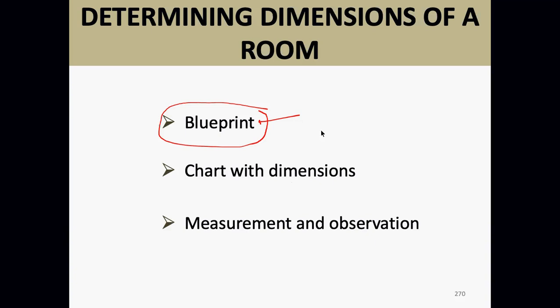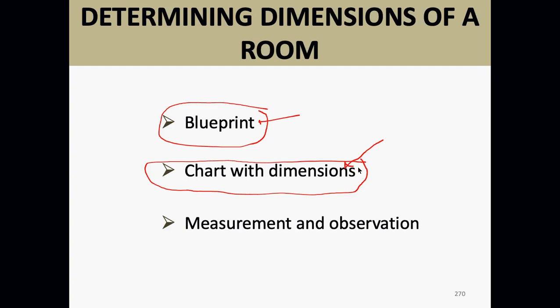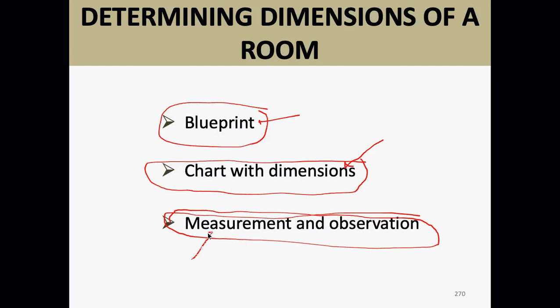From those blueprints, the instructor discovered the cooling system installed wasn't even close to what was specified. You can also get a chart of room dimensions from the builder, or find it online through real estate listings — agents have interior measurements from when the house was last sold. The reason students are practicing measuring themselves is that on a customer call, you probably won't have blueprints or a chart.